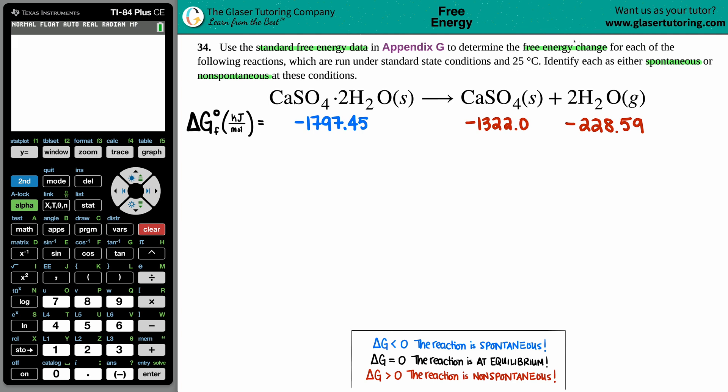We want to find that free energy change. Remember, free energy change is a ΔG—the change is always a delta value. Since we're using standard values, we're going to the back of the textbook to search for ΔG°. Anytime you see that degree symbol in the upper right-hand corner, that means it's standard and we're taking values from the back of a textbook.